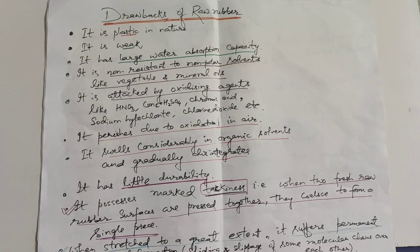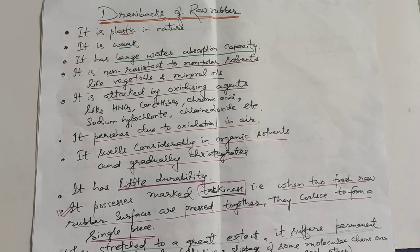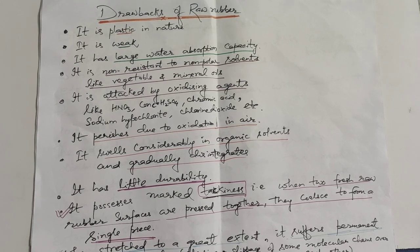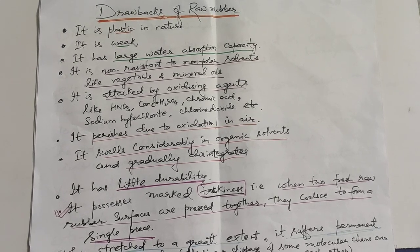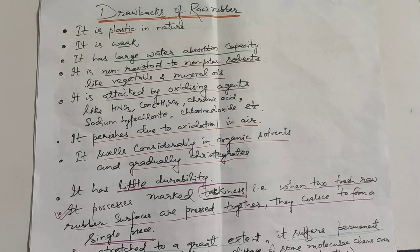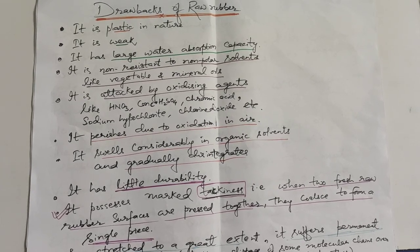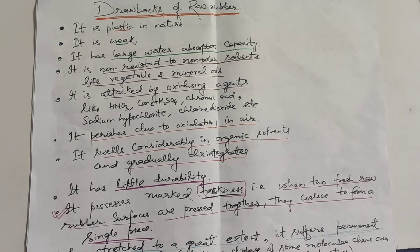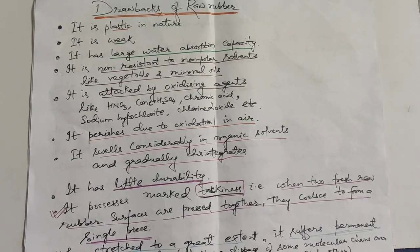Now let's discuss the drawbacks of raw rubber. It is plastic in nature and it is weak. It has large water absorption capacity. It is non-resistant to non-polar solvents like vegetable and mineral oils.